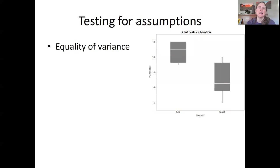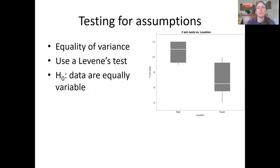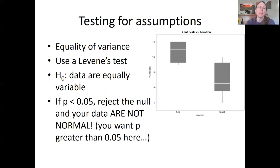All right, so the second assumption is that the samples are equally variable. So here you can see maybe a little bit less variation for the field samples compared to the forest samples. And so to test whether these really are equally variable, we use what's called a Levene's test. And Levene's test has a similar setup. The null hypothesis is that the data are equally variable. There's no difference in variation between the two groups. And so, again, if your p-value is less than 0.05, you reject the null, and your data are not equally variable. So there's a little typo there. You want your p-value to be greater than 0.05, again, in this case, for the Levene's test.